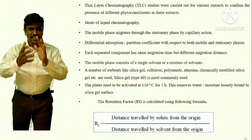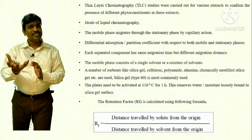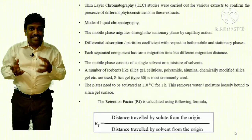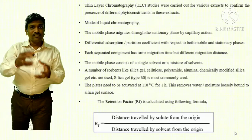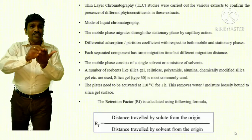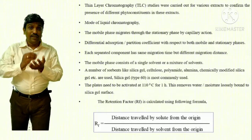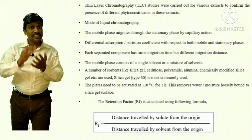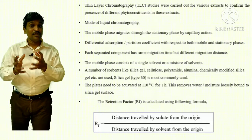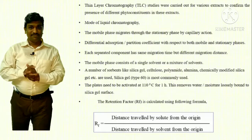In thin layer chromatography, the mobile phase is a single solvent or a mixture of solvents. Migration of the components — meaning the phyto constituents we extract — are run with the help of the mobile phase. Migration time is the same, but migration distance may be different depending on the affinity towards the mobile phase and stationary phase.